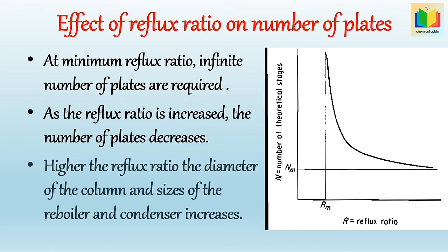At a higher reflux ratio, the diameter of the column and the sizes of the reboiler and condenser increase. This is because at a higher reflux ratio the number of plates is minimum, so the time of contact for mass transfer in the column will be minimum. Hence, for better separation, the diameter of the column and sizes of the reboiler and condenser must increase.